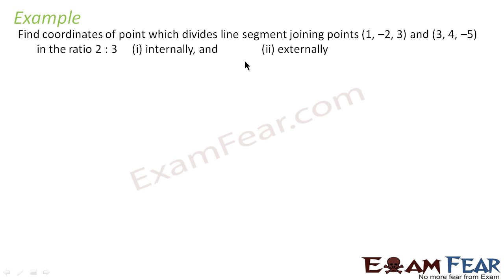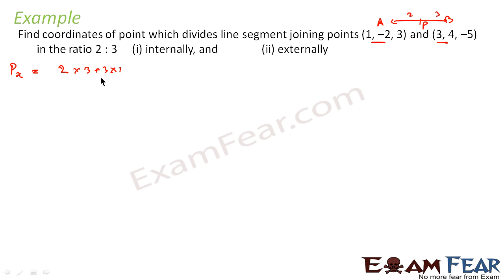Let's take some examples. We have to find the coordinates of the point which divides the line segment joining (1, −2, 3) and (3, 4, −5) in the ratio 2:3. Let's call these points A and B, and the dividing point P. For Px, using the formula mx2 + nx1 by m+n, that is (2×3 + 3×1)/(2+3) = 9/5.